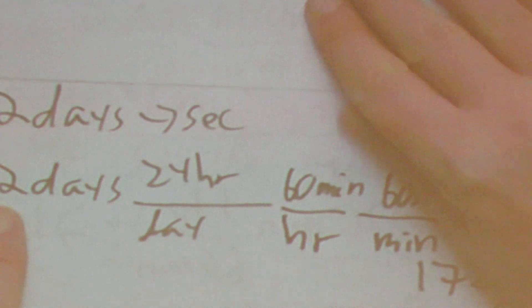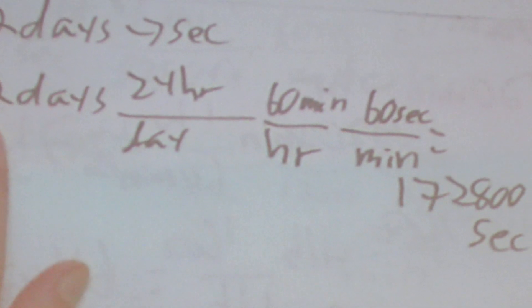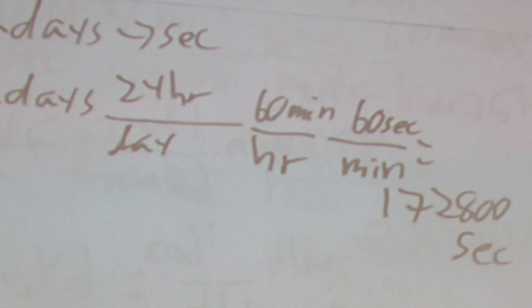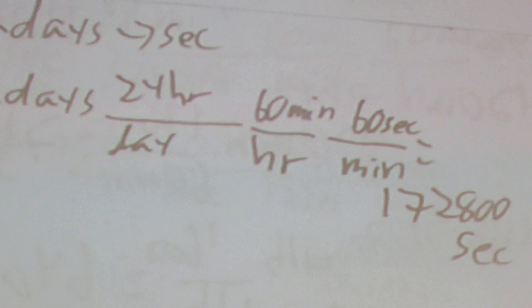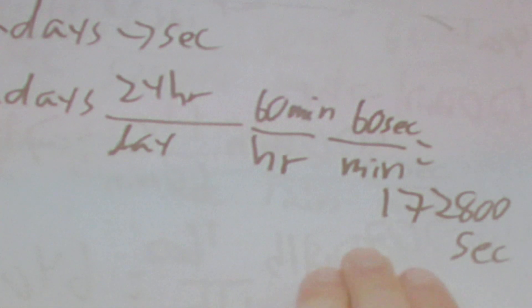Let's say we need to go 2 days into seconds. This one is kind of long. We say there are 24 hours in a day, 60 minutes in an hour, and 60 seconds in a minute. When we do 2 times 24 times 60 times 60, we get 172,800 seconds.